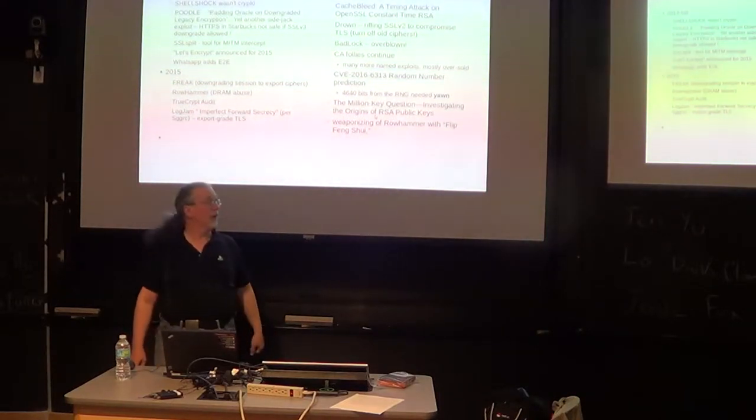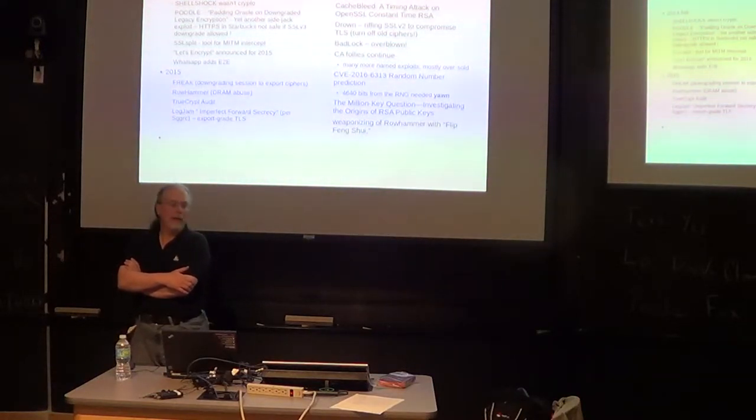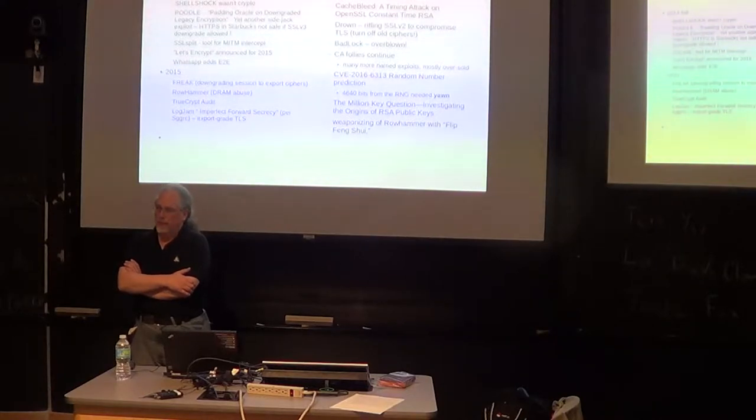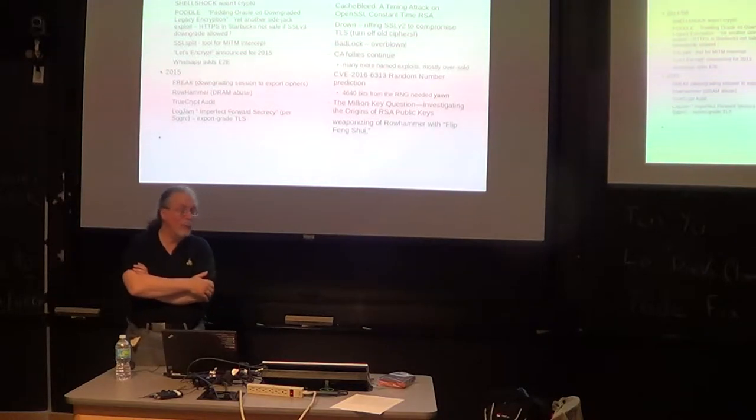One paper that recently came out that was interesting, somebody grabbed all the public keys they could find on the internet and looked at them statistically and managed to figure out for most of them what algorithm created it. Therefore they can categorize which keys might be vulnerable. So your key leaks how it was created just by its very existence because people use different ranges of primes.